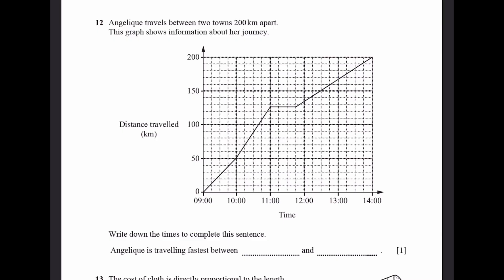Question 12. Angelique travels between two towns 200 kilometers apart. This graph shows information about her journey. The graph is a distance-time graph. Write down the times to complete this sentence. Angelique is traveling fastest between dash and dash. Traveling fastest means the slope must be very steep. So the steepest slope is over here, which means between 10 o'clock and 11 o'clock.